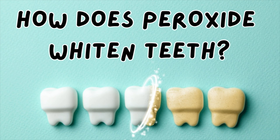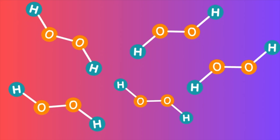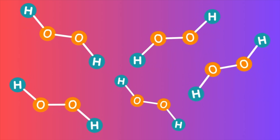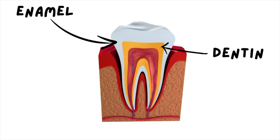The first step is the penetration of the hydrogen peroxide. Hydrogen peroxide is a small molecule which easily penetrates the enamel and the dentin of your teeth, which are the outer and inner layers of the teeth. This is important because stains can be both superficial — on the outside surface of your teeth — but they can also be intrinsic or internal, deeper within the tooth structure.